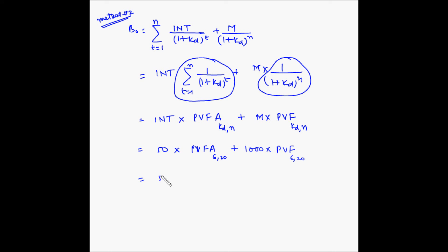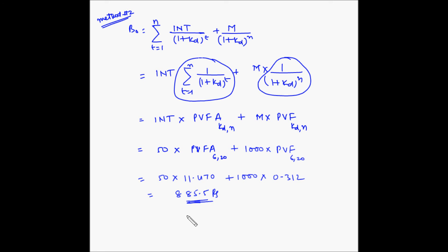The PV annuity factor at 6% for 20 periods is 11.470, and the PV lump sum factor is 0.312. So the bond value is 50 times 11.470 plus 1000 times 0.312, which equals 885.5 rupees. This is the present value of the bond. Other methods such as using the annuity formula or a financial calculator — explained in the time value of money videos — will give the same answer of 885.5 rupees.